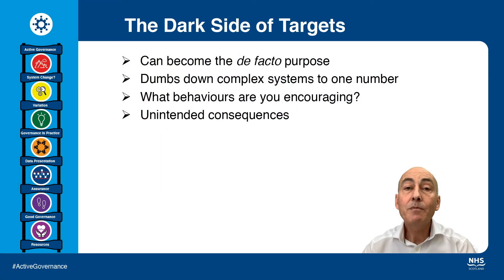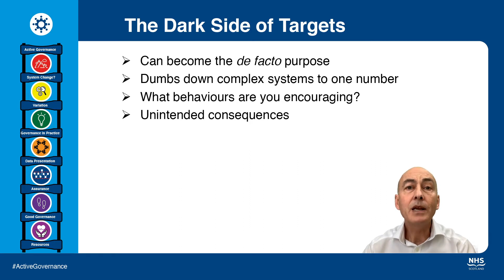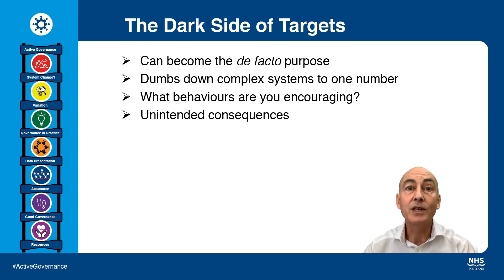There are many other examples where targets have given the wrong outcome. You may have hit the target, but you've missed the point. So giving the police a target for the number of arrests — that target will probably be met. But are they arresting the right people, the ones for the serious crimes, or is it the small misdemeanours?